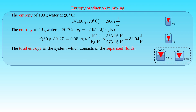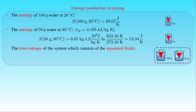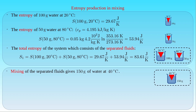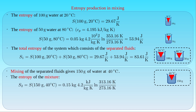We can now determine the total entropy of the system consisting of the two separated fluids. The total entropy S1 is the sum of the entropy of the two liquids, and substituting the computed values gives 83.61 J/K. If we mix these two separated fluids and measure the temperature of the mixture, we find that 150 grams of water reaches 40°C. The entropy S2 of the mixture can be determined using the same formula, giving 86.09 J/K. The difference S2 minus S1 equals 2.45 J/K, which is greater than zero.